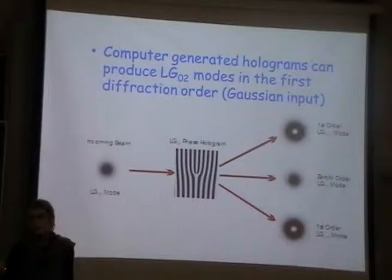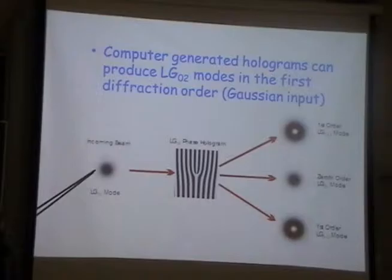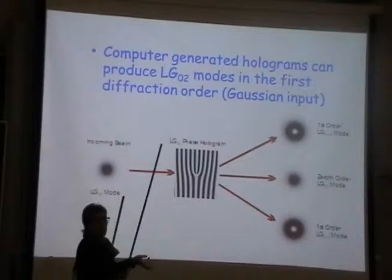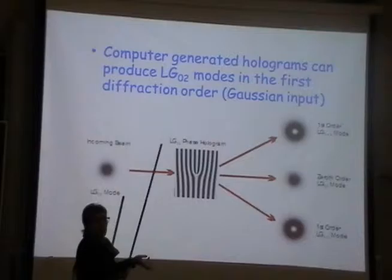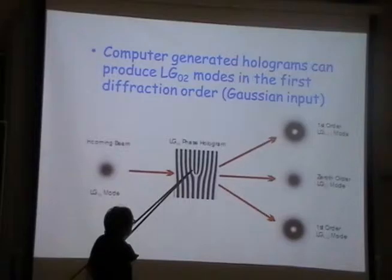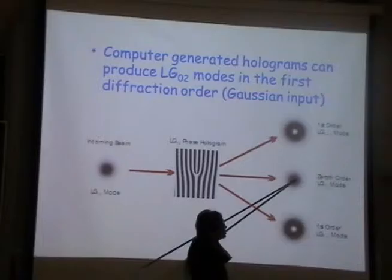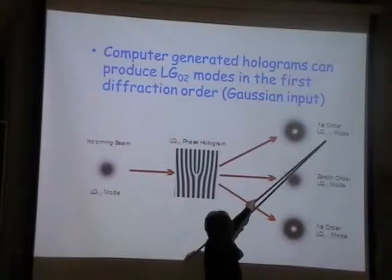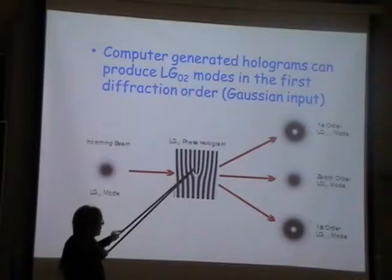Now I want to address measurement of orbital angular momentum by mode decomposition. As a reminder: if I have an incoming Gaussian beam (LG00) and I put it onto a phase hologram, I create a Gauss-Laguerre beam of higher order. For an LG02 hologram, in zero order I still get the lowest order beam, but in first order I get LG02, and in minus first order I get LG0-2 — so plus 2 and minus 2, which are identical.